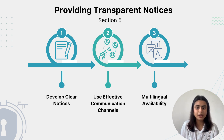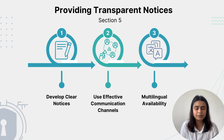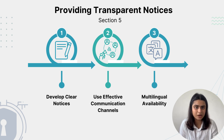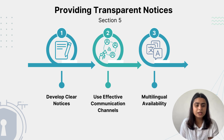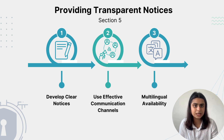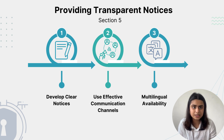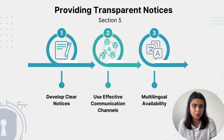For example, an online travel booking company like Booking.com collects personal data for reservations and targeted promotions. Booking.com includes a transparent privacy notice when users enter their details. This notice explains how the data is used for bookings, personalized recommendations, and marketing. It is presented in simple language, making it easy for users to understand.